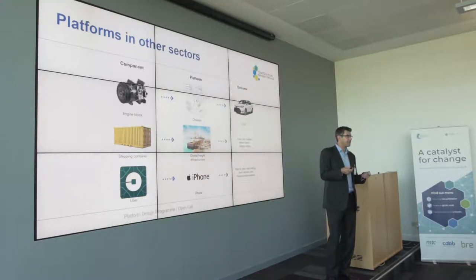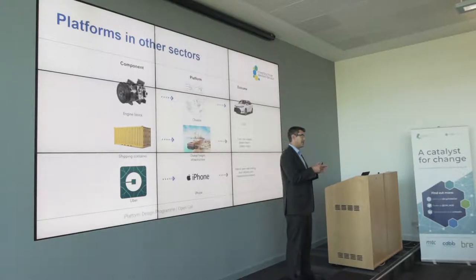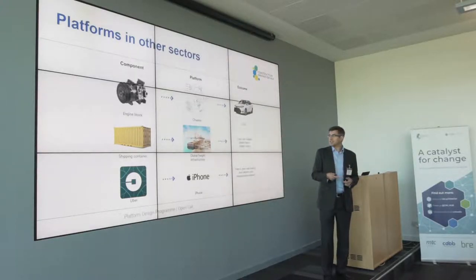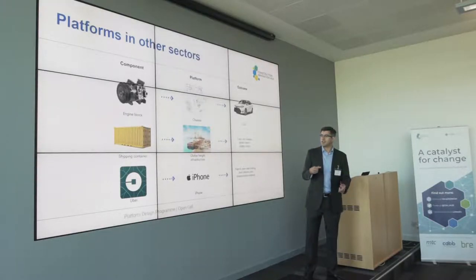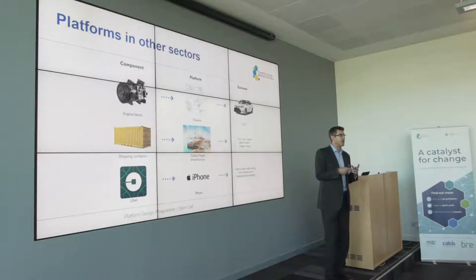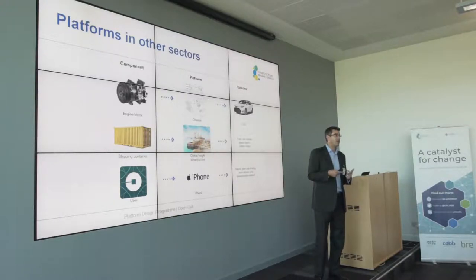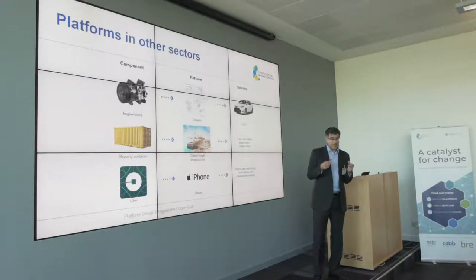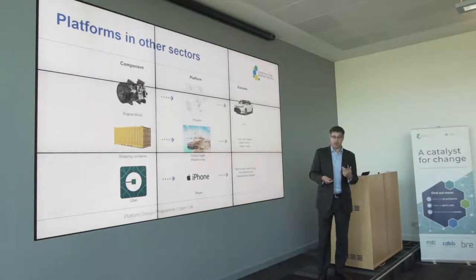Malcolm McLean, who developed the container, surprised everyone by open-sourcing the dimensions and the twist locks — the thing that makes it work. Everyone thought this was crazy because he was sitting on a gold mine. His view was that he'd rather have a tiny slice of a vast pie. What he didn't see coming was that you get ships and docks and cranes — a whole physical infrastructure invented around those dimensions and twist locks — and then software that matches buyers and sellers and optimizes containers and ships. You get a whole digital-physical infrastructure, resulting in a massive transformative effect on the economy.